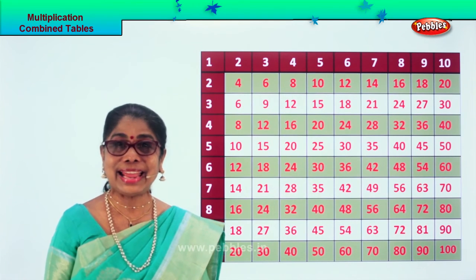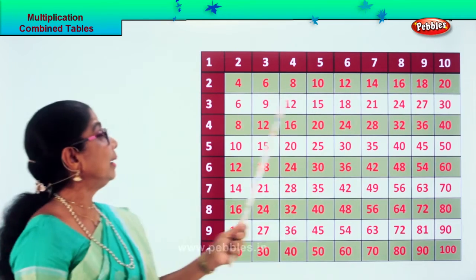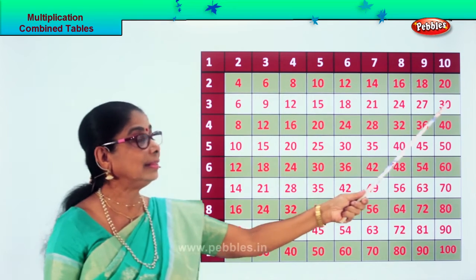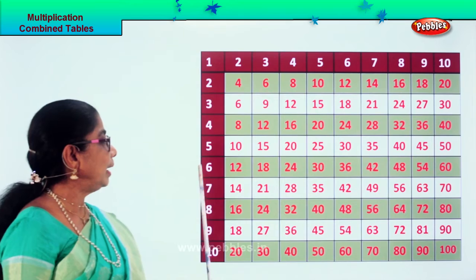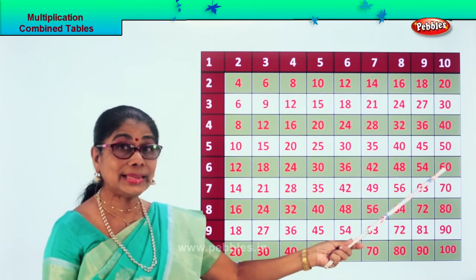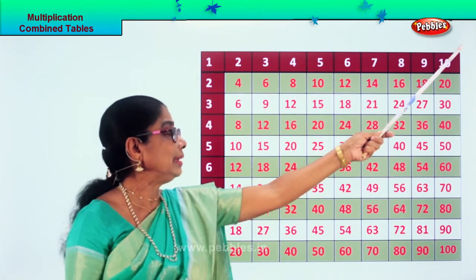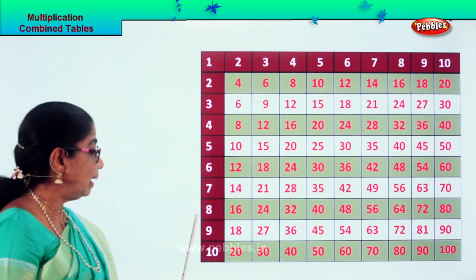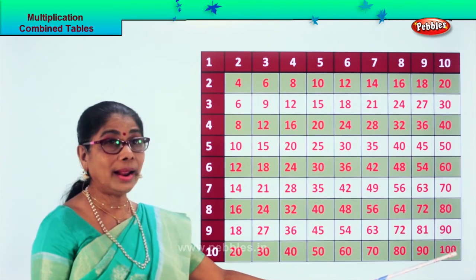Now what's left? Ten. Let's take the ten: ten ones are ten, ten twos are twenty, ten threes are thirty, ten fours are forty, ten fives are fifty, ten sixes are sixty, ten sevens are seventy, ten eights are eighty, ten nines are ninety, ten tens are one hundred.